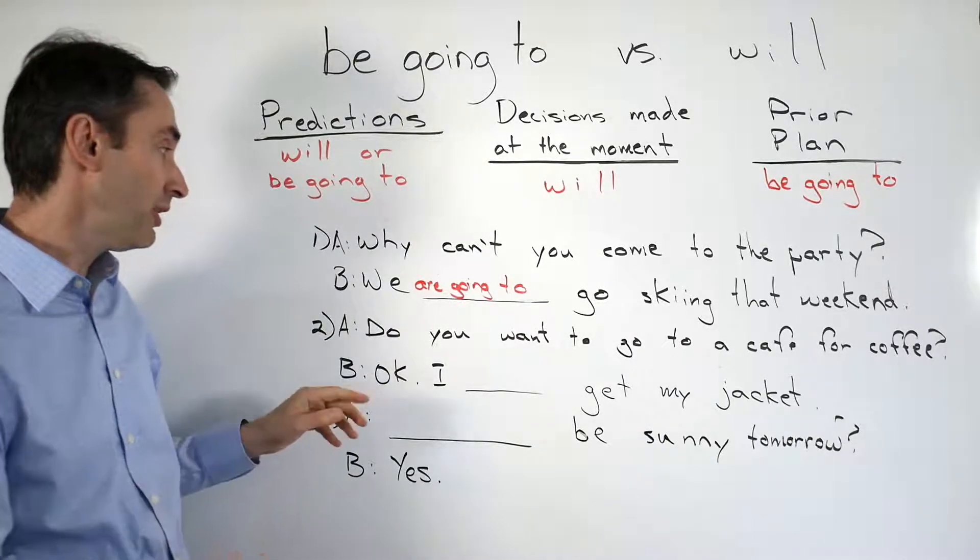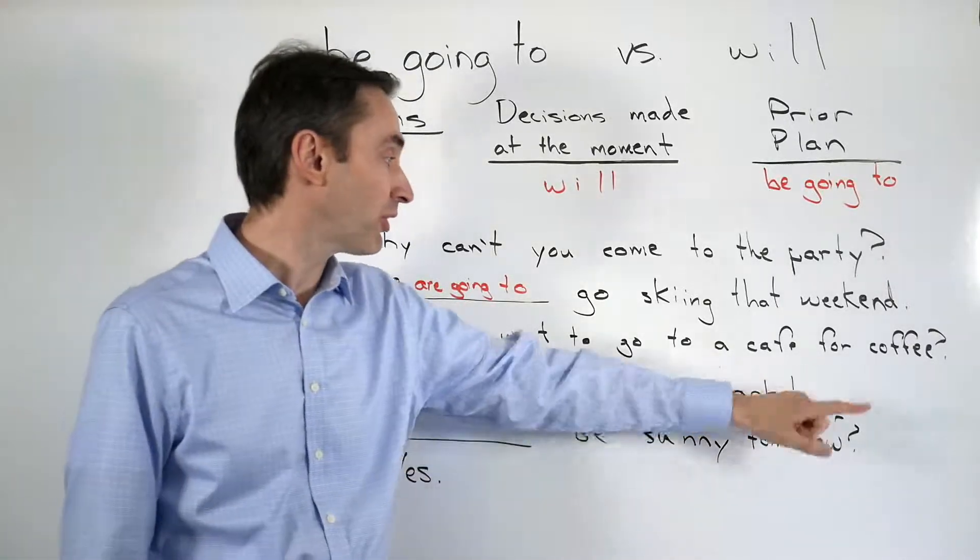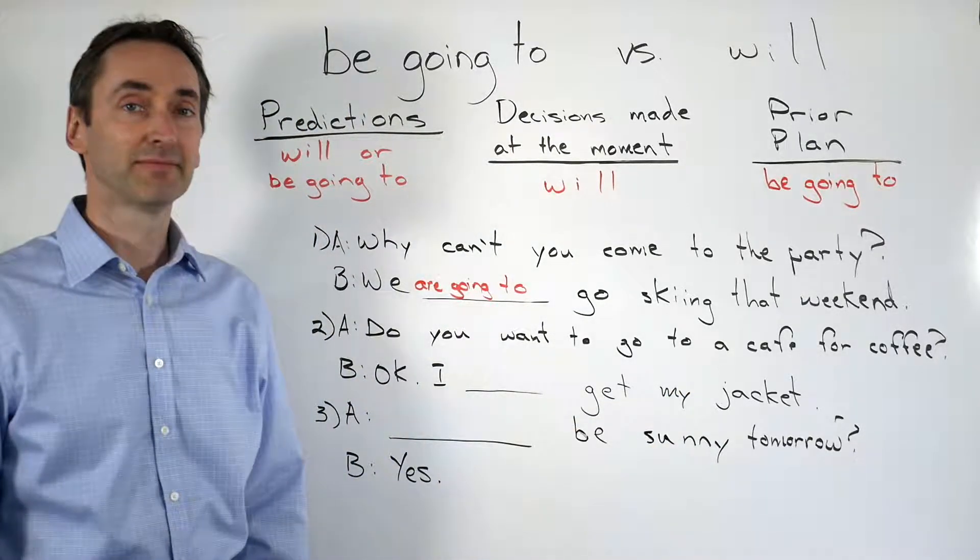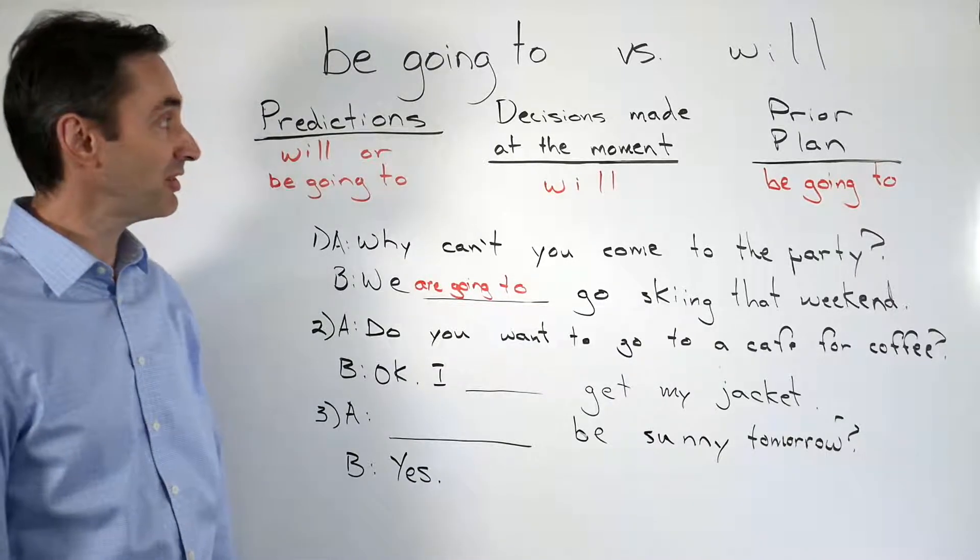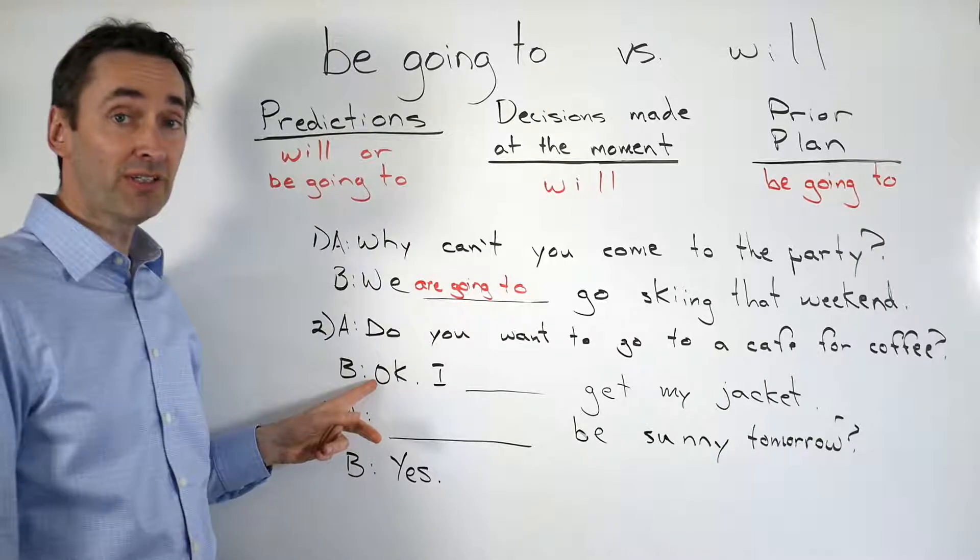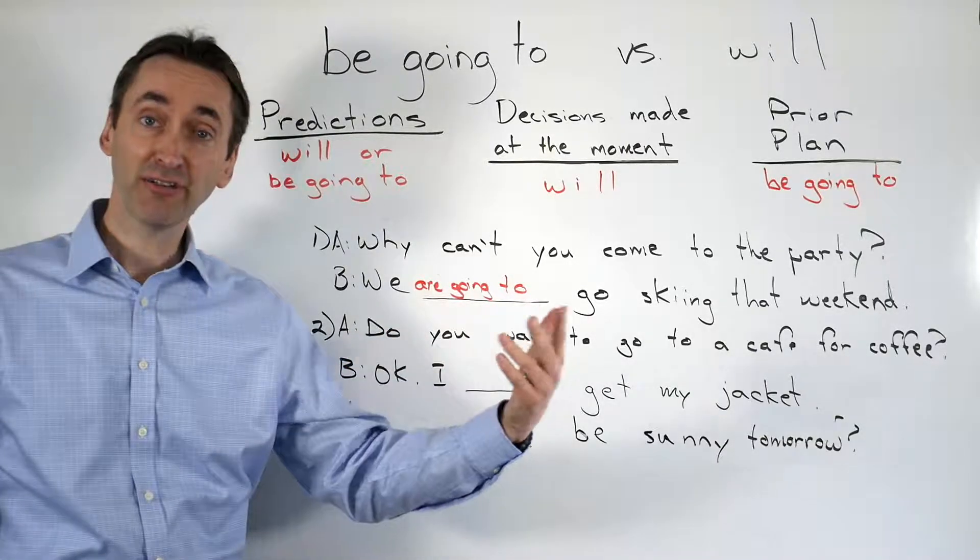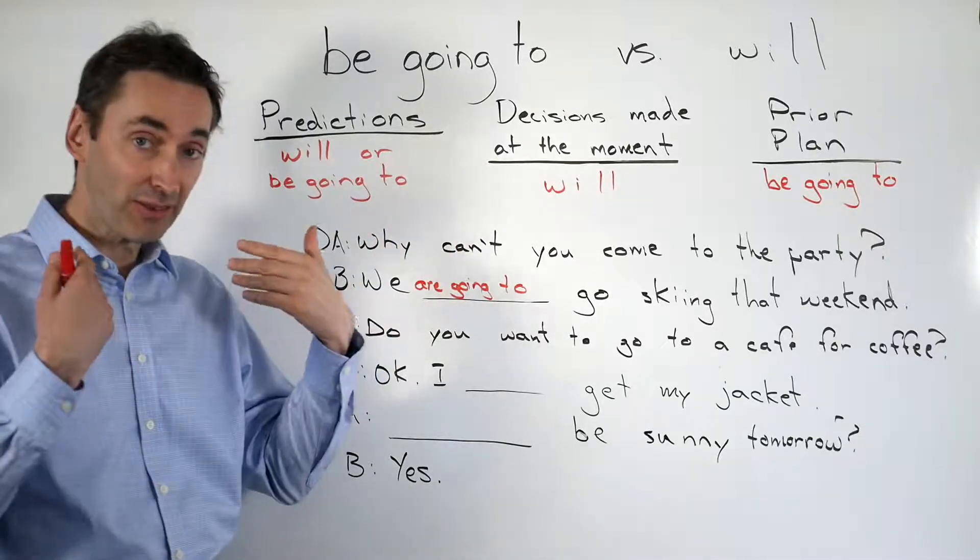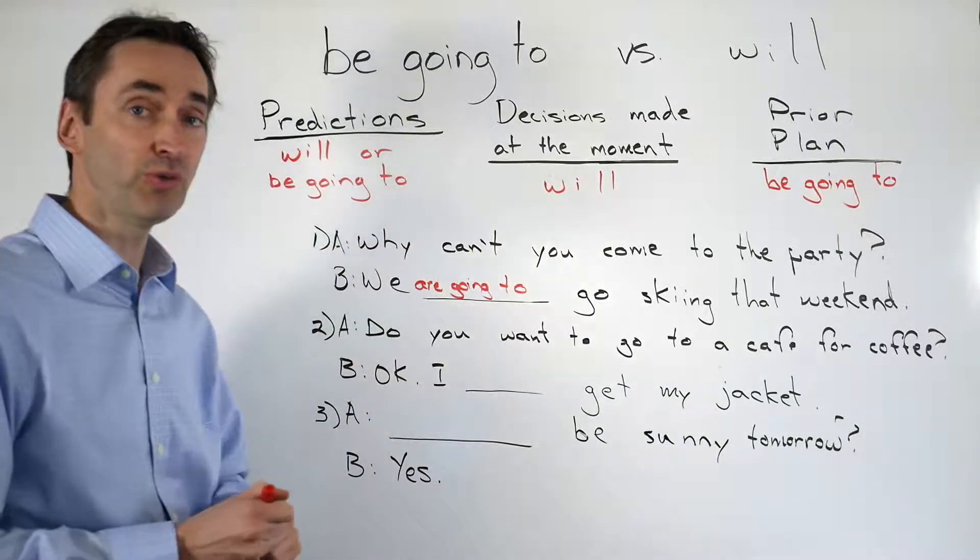And question number two. Do you want to go to a cafe for coffee? OK, I get my jacket. Number two is clearly a decision made at the moment. A asks B right now. Do you want to go to a cafe for coffee? So B is making a decision at the moment. So we want to use will in this case.